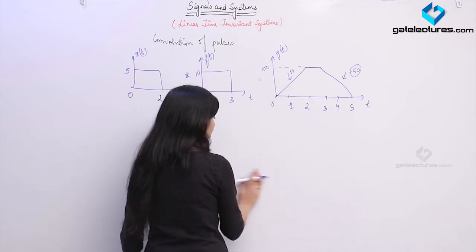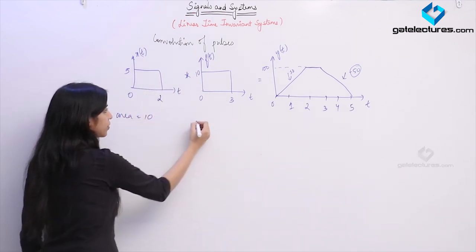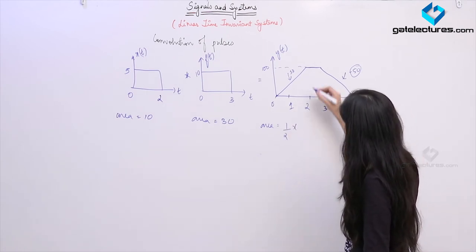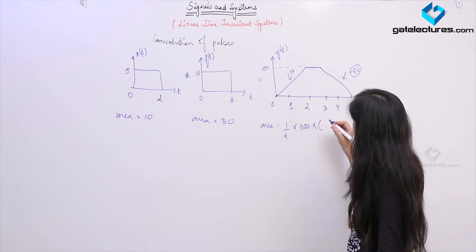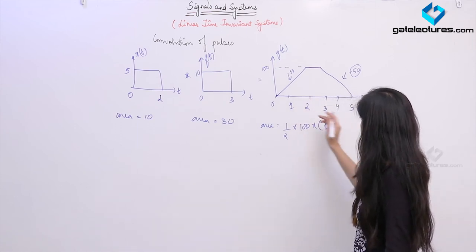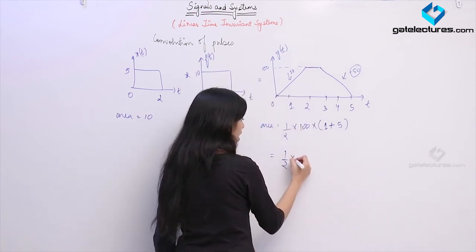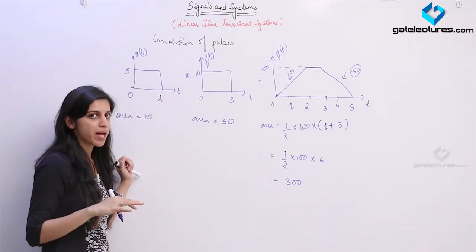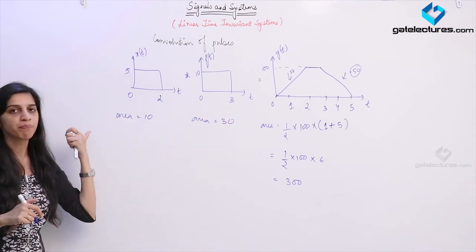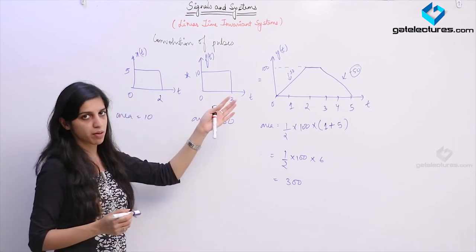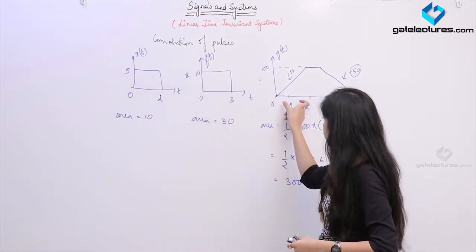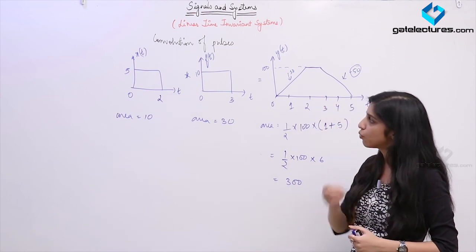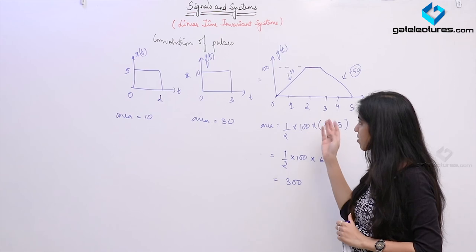Calculating the area: area of the first pulse is 10 units, area of the second pulse is 30 units. Area of the trapezoid = half × height × sum of parallel sides = half × 100 × (1 + 5) = 300 units. Multiplying the individual areas: 10 × 30 = 300 — confirming that the area of the convoluted pulse equals the product of the areas of the two individual pulses. The same rules apply: lower limit is sum of lower limits, upper limit is sum of upper limits, and the duration of rise and fall equals the smaller-width pulse.